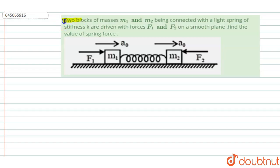Hello, welcome to Doubtnut. In this question, given two blocks of masses M1 and M2 being connected with a light spring of stiffness K, are driven with forces F1 and F2 on a smooth plane. Find the value of the spring force.